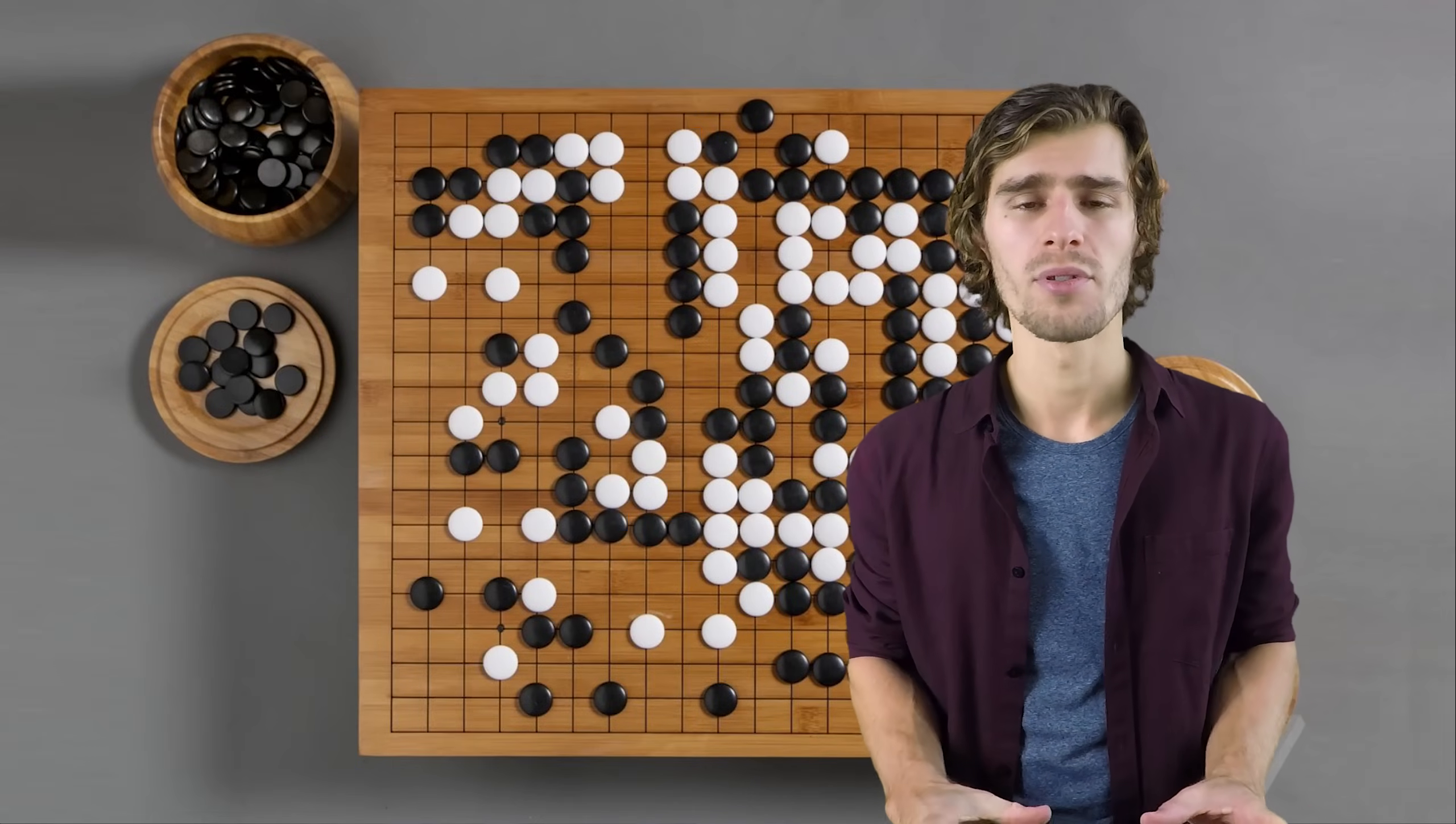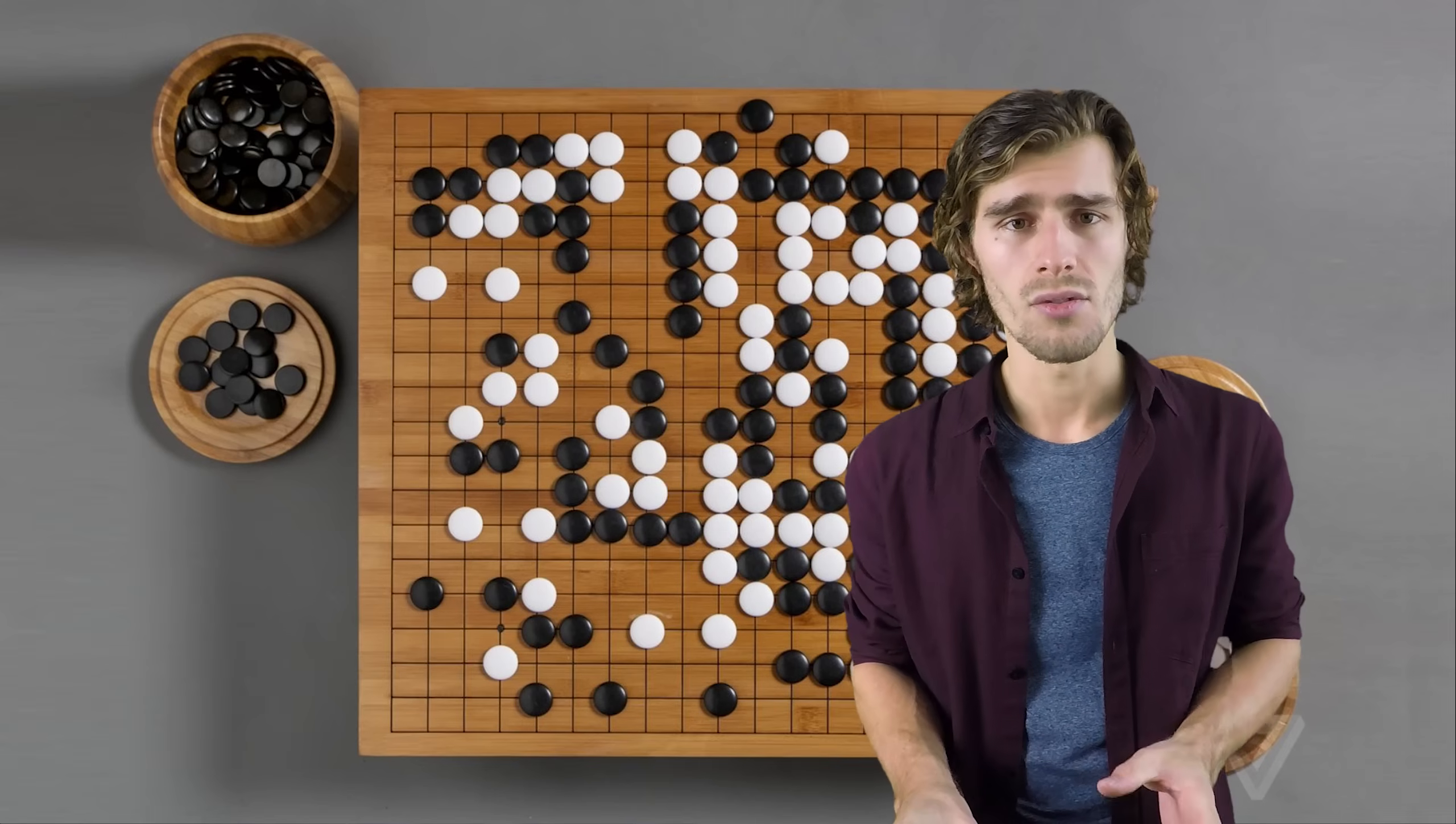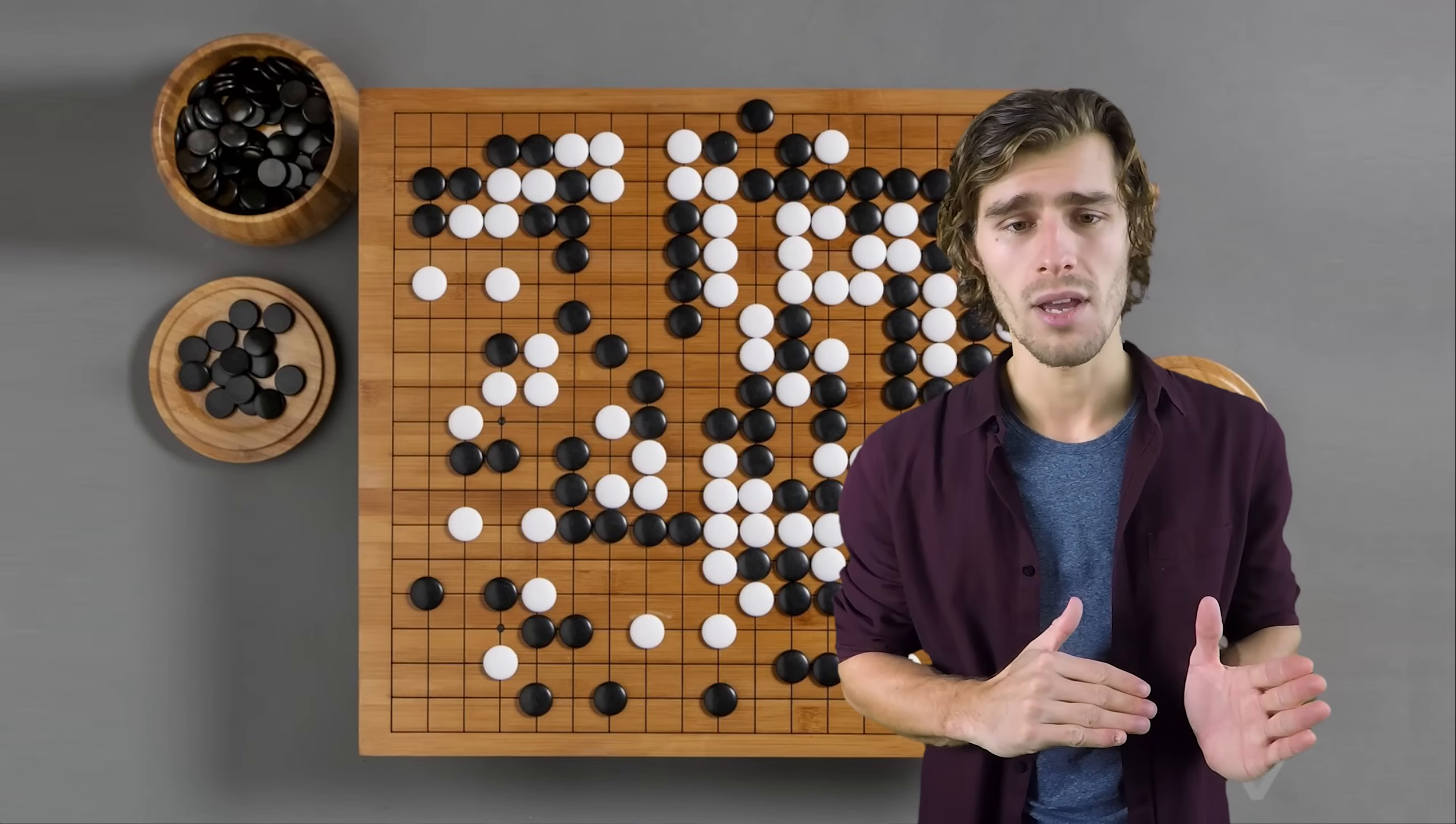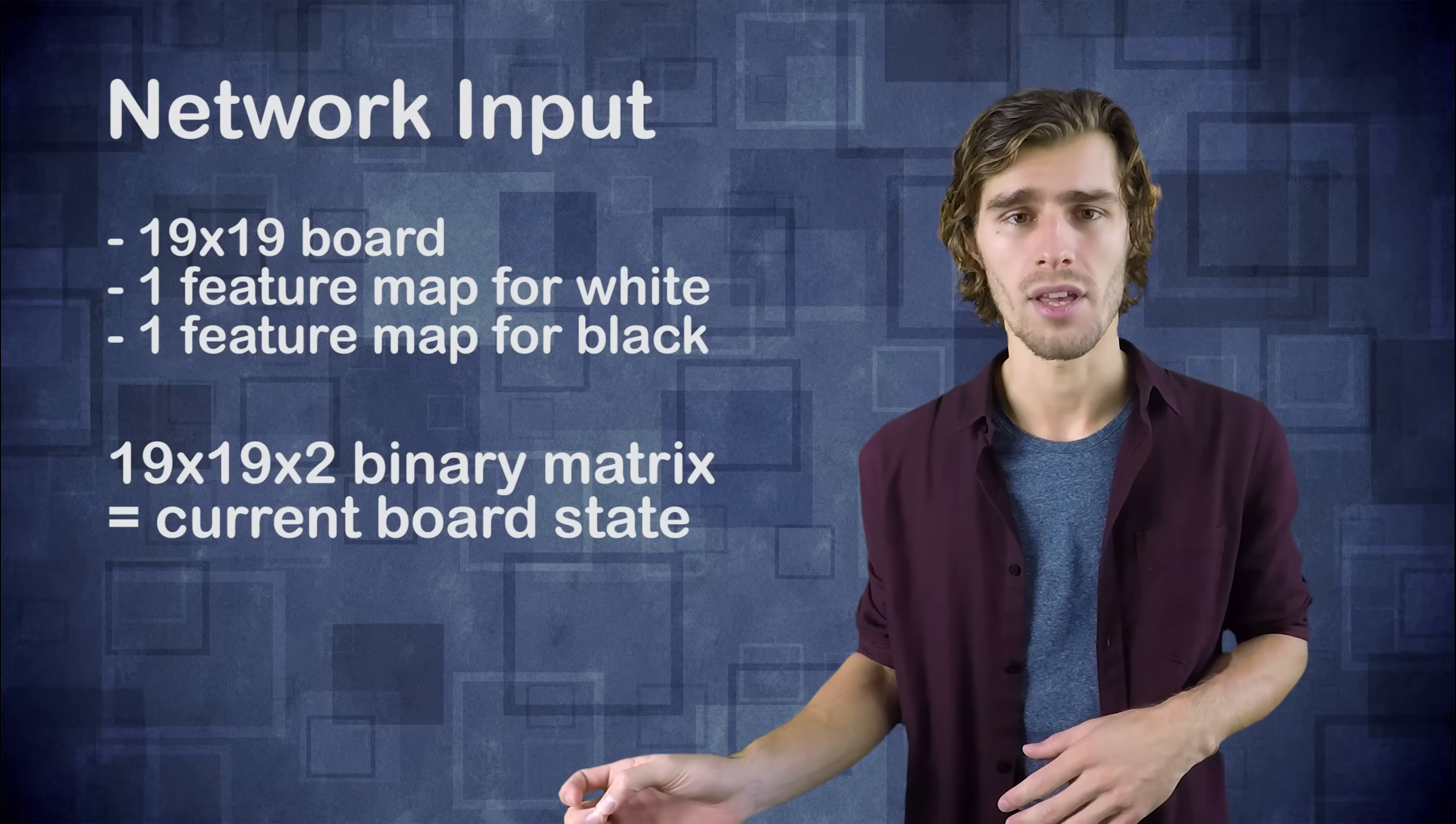So we start out with a board position in the game of Go. The game of Go consists of a 19 by 19 grid. So you have 19 by 19 squares, every single one of them containing either a white stone, a black stone or nothing at all. What they decided to do is they create a separate feature map for the white stones and for the black stones. So that means that for all of the white pieces on the board, you have a 19 by 19 binary matrix which just says a 1 whenever there is a white piece on that position and a 0 when there is not a white piece there. In the black feature map you do the same thing, a 1 whenever there's a black stone and a 0 when there's nothing at all.